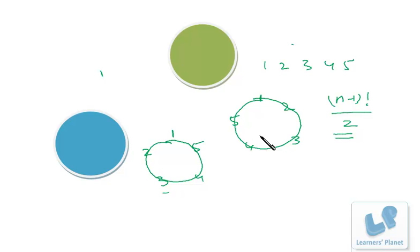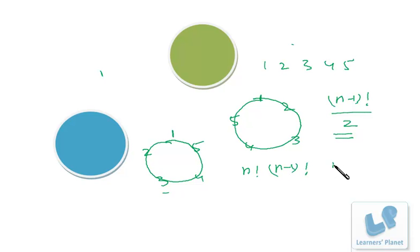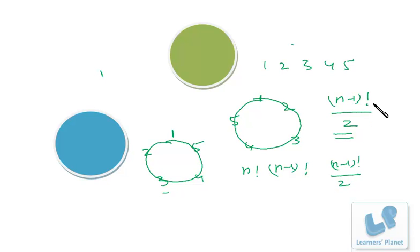So we have four key concepts: first, linear arrangement which is n factorial; second, circular arrangement when anti-clockwise and clockwise directions are considered different, which is n minus 1 factorial; third, circular arrangement when the different ordering of neighbors is considered the same, which is also n minus 1 factorial divided by 2; and fourth, arrangement of garlands or pearls in a string, which is n minus 1 factorial divided by 2. Now we are ready to take on question challenges.